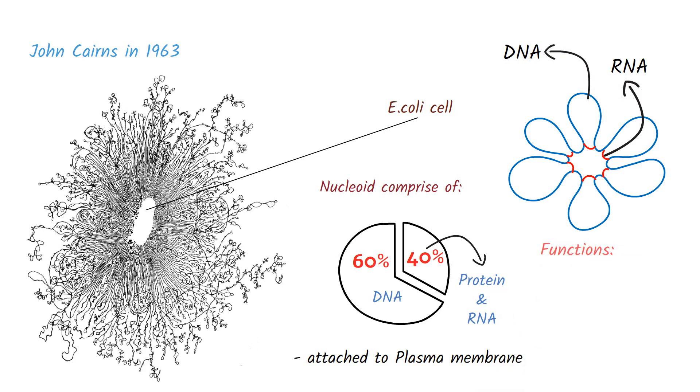Like any other cell, the nucleoid in bacterial cell controls all the activities of the cell, like reproduction, regulation, and cell growth.